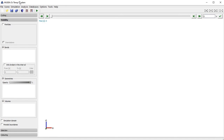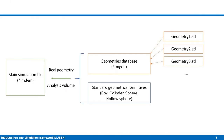Let's look at how the work with geometries is organized in MUSE. It is possible to add to a specific simulation file two types of geometries: real geometry or analysis volume. Real geometries are those which are physically present in the scene and they participate in contact between particles and these geometries. Analysis volumes are used for supplementary purposes, like performing analysis of particles situated in a specific zone or for generating particles.